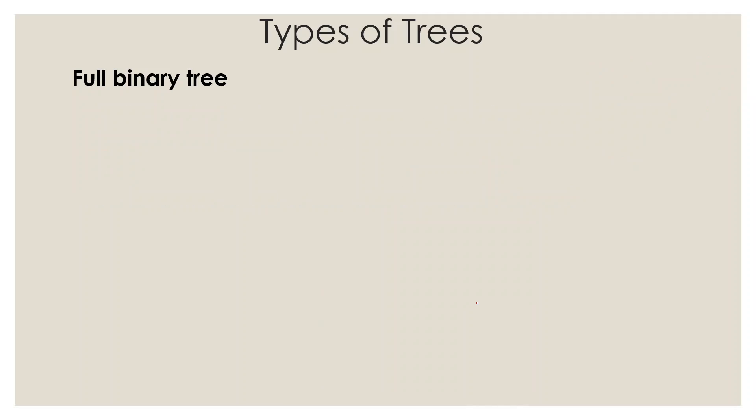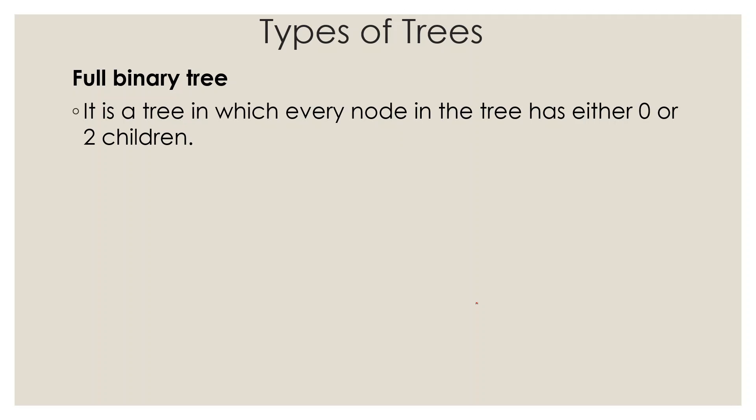The next topic is the full binary tree. A full binary tree is a binary tree in which every node has either 0 or 2 children. This is different from a regular binary tree where nodes can have 0, 1, or 2 children — in a full binary tree, 1 child is not allowed. Every node must have exactly 0 or 2 children.